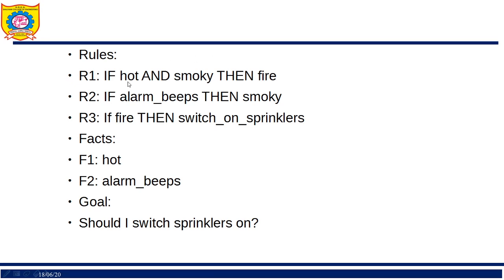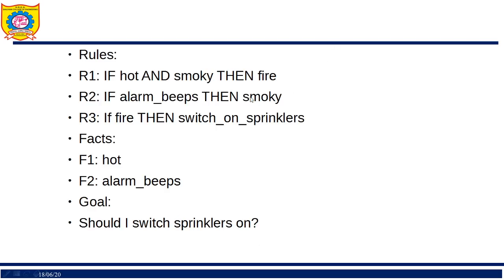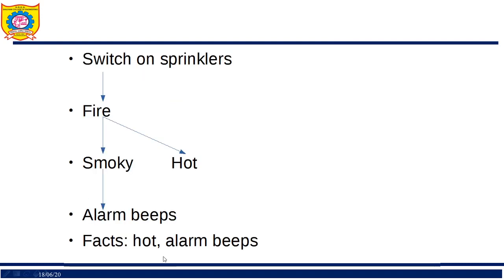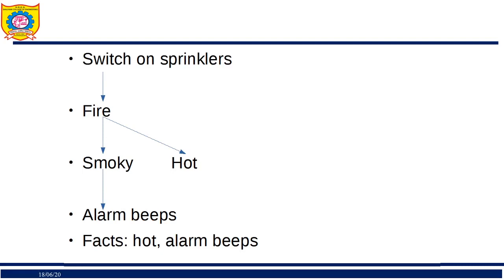Smoky requires alarm beeps via Rule 2. So tracing backwards, we derive the facts: alarm beeps and hot. These are the base facts we need to confirm the goal. This reverse derivation from goal to facts is backward chaining.